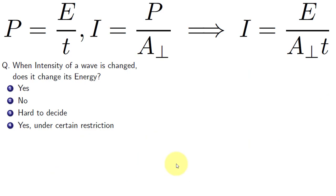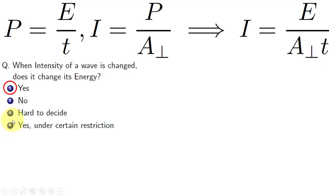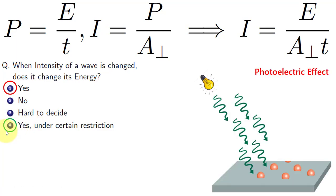Now the question is: when the intensity of a wave is changed, does it change its energy? The straightforward answer is yes, but there is another answer — option 4 — which says yes, under certain restrictions. This may seem the most suitable answer because intensity depends not only on energy, but also on perpendicular area and time. So the most suitable answer is the 4th option.